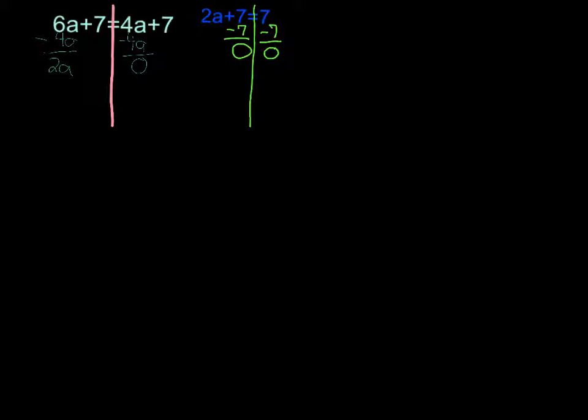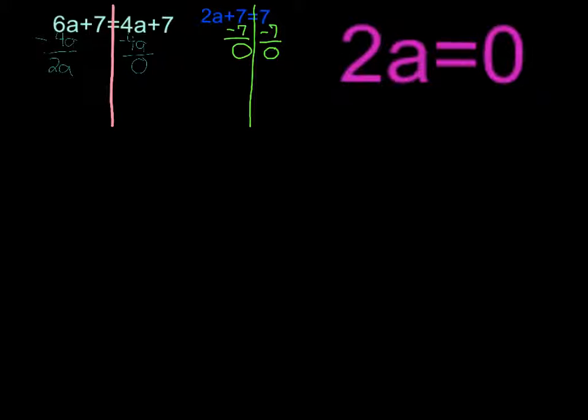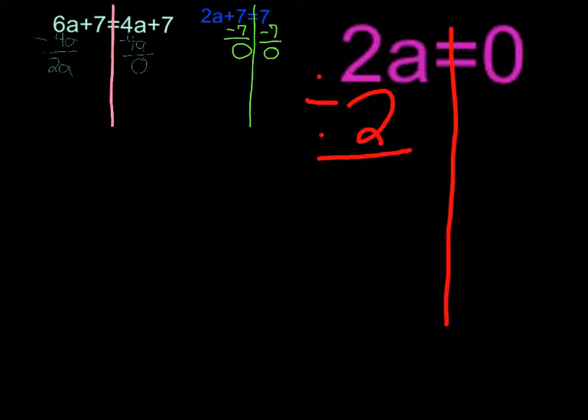Now you're almost done. Now you have 2a equals 0. So you want to keep it a scale. It says 2 times a. So you want to do the opposite. So you want it to be 2a divided by 2 equals a. Now you have to do the same to the other side. So 0 divided by 2 equals 0.